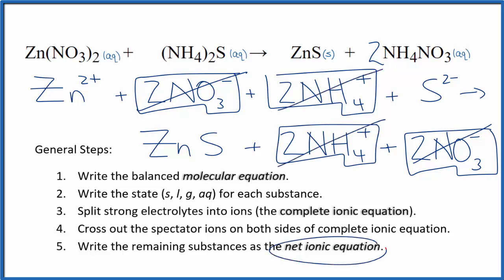What's left, that's the net ionic equation for zinc nitrate plus ammonium sulfide. I'll clean it up and write the states. We'll have our net ionic equation.